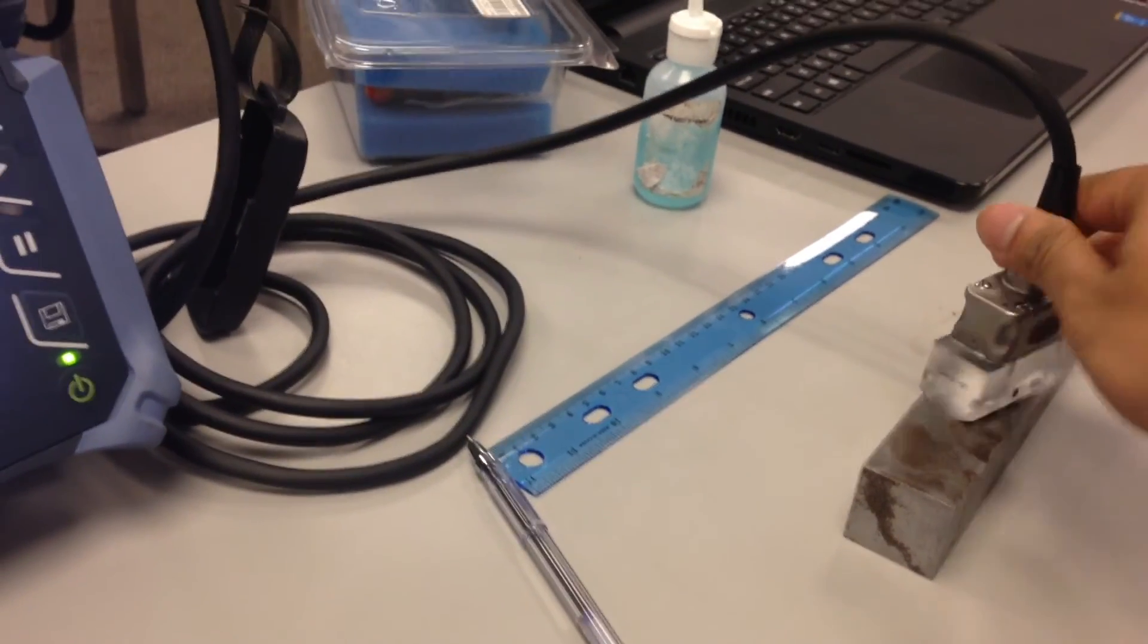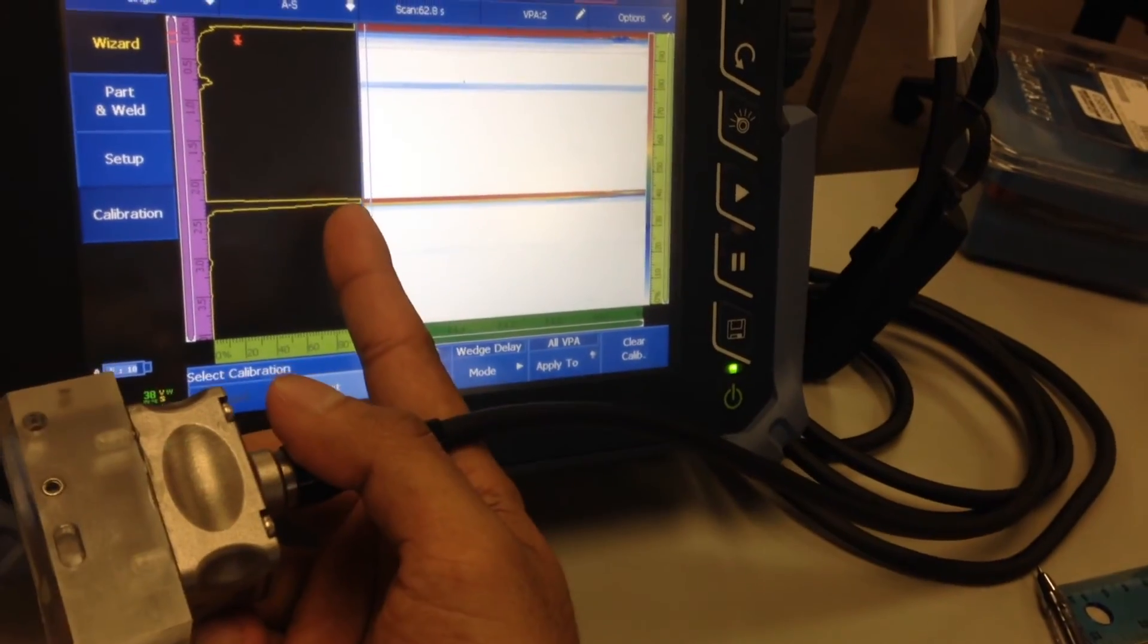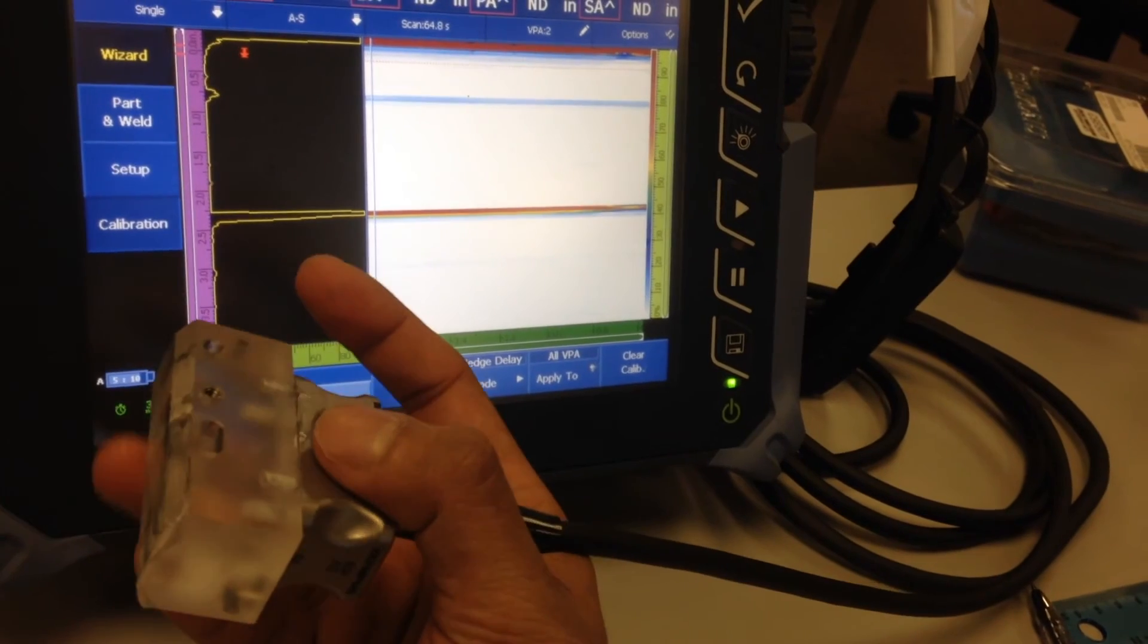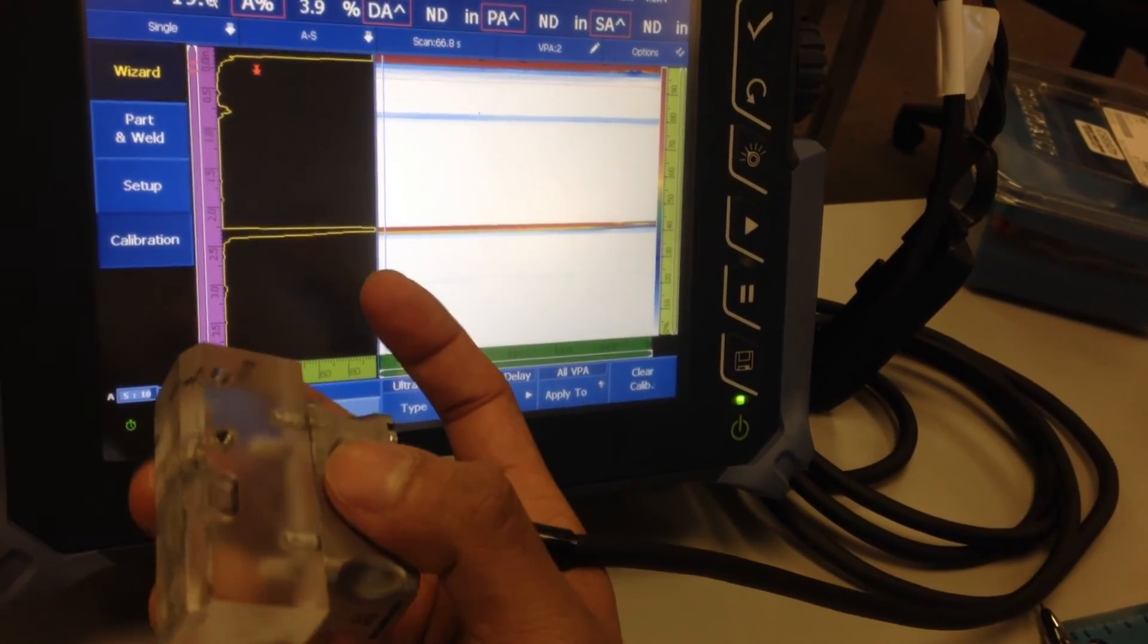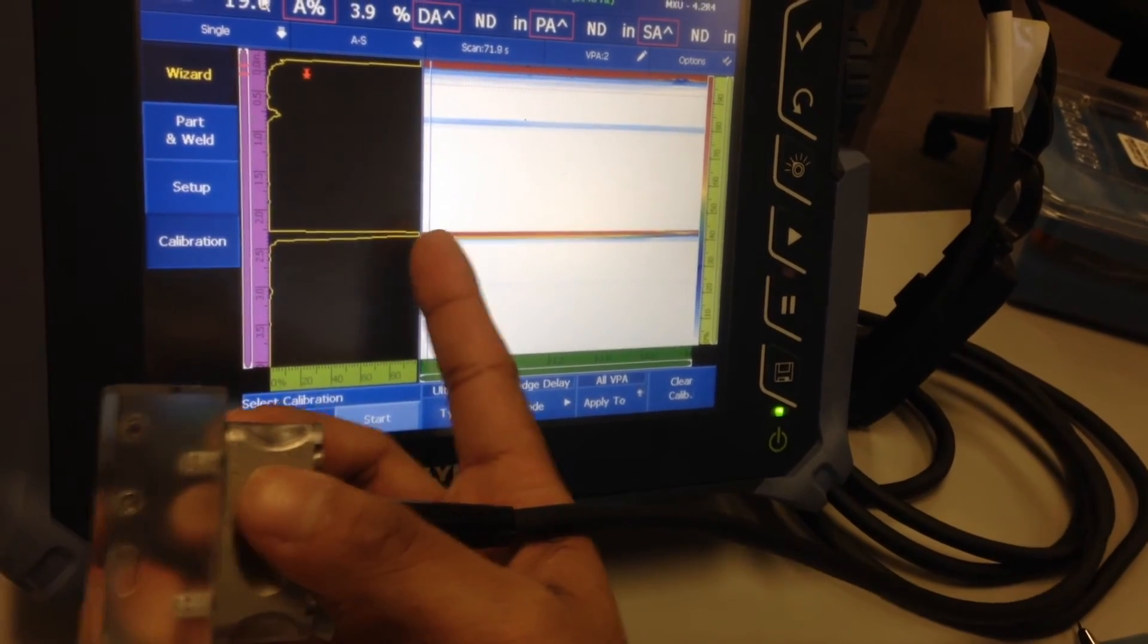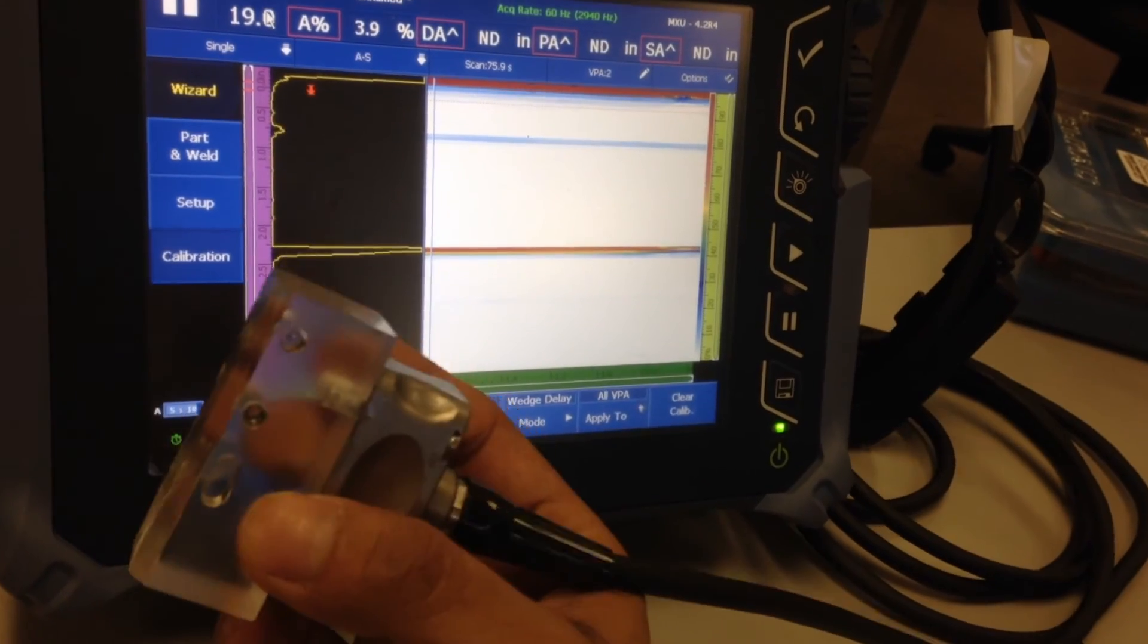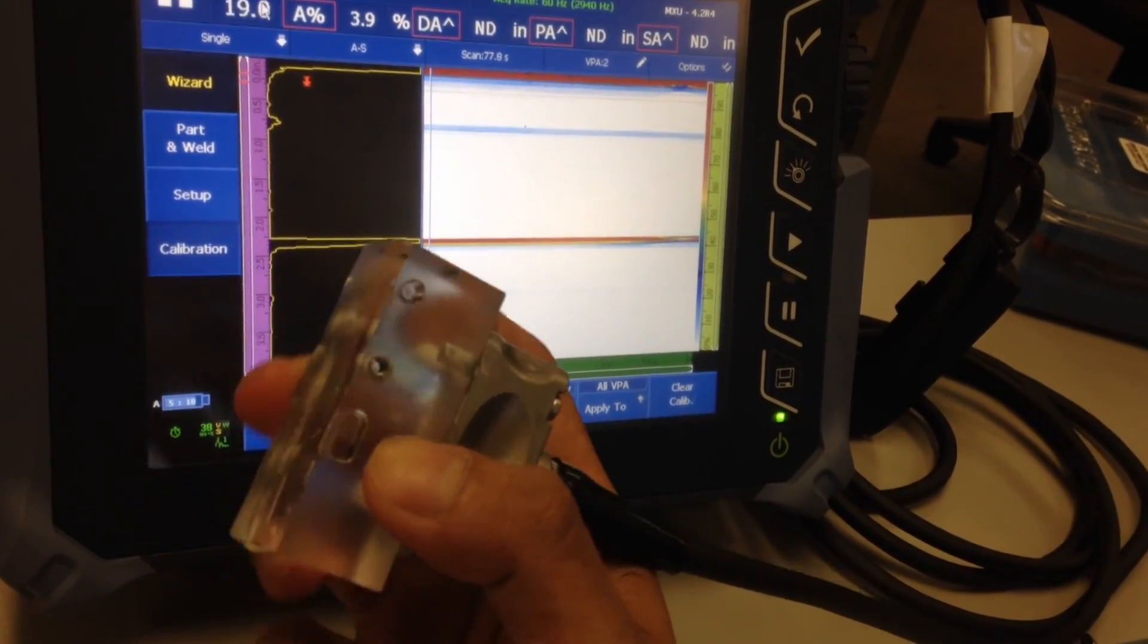Now don't confuse that signal with the second back wall. If you are confused which one's the back wall, just take your probe and wedge off of the calibration block and watch the screen for the signal that stays on the screen. So the one that stays is actually the signal coming off of the wedge and air interface. It's bouncing off of the wedge thickness, so that signal will always stay there in a zero-degree inspection with a wedge on. Don't confuse that with the back wall.